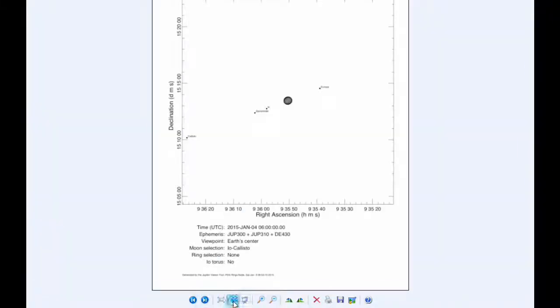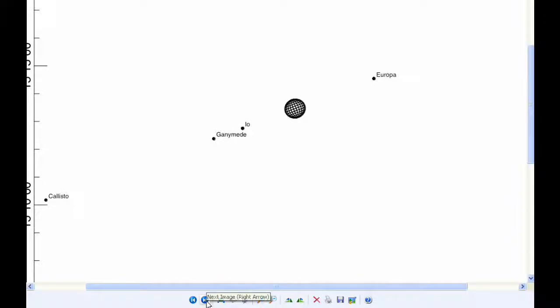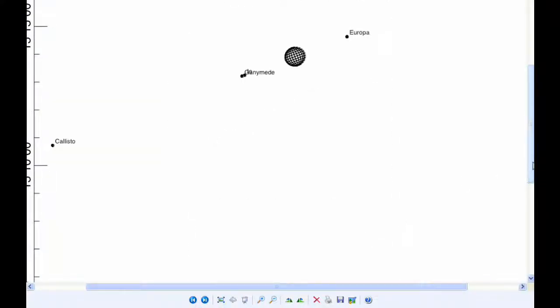At 6 hours UTC, Io is still in Quadrant 1 heading east. By 12 hours UTC, Io is just past its eastern elongation and now it's in Quadrant 2 heading west.